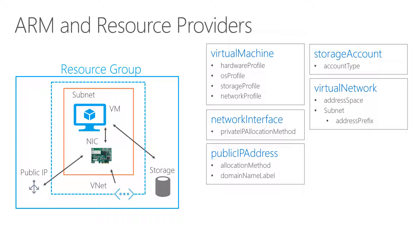Here's an example of a virtual machine ARM template. Starting on the left side, we have our resource group — the outer blue box — which contains different services. We have our virtual machine, which defines a hardware profile, an OS profile, storage, and network-related things. It also contains a network interface, a public IP address, a storage account, and other network-related details — like in which address space we want to deploy our virtual machine, into which subnet, and which address prefix it should use.